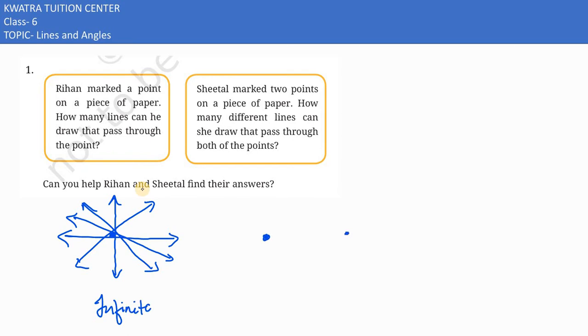Sheetal said that we have two points and they are marked on a piece of paper. They are saying how many different lines can she draw that pass through both of the points?